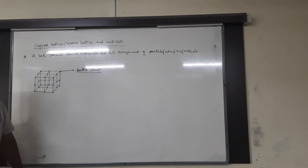Calculation of number of particles or effective atoms per unit cell, usually denoted by z or n. Before calculating, we need to know the contribution of each particle towards a particular unit cell based on its position — corner, face, body center, or edge center.